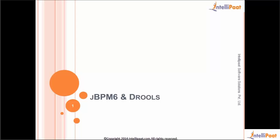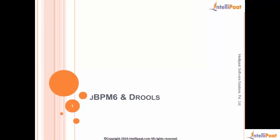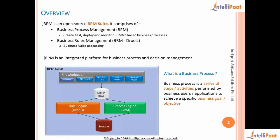Today we'll have a session on JBPM 6, the latest version of JBPM and Drools. JBPM is a BPM suite altogether, and it has got two components: business process management and business rules management. The main advantage of this particular BPM suite is that these two are integrated within a single platform, unlike other vendors where the rules and process engine are not integrated as well as in JBPM.